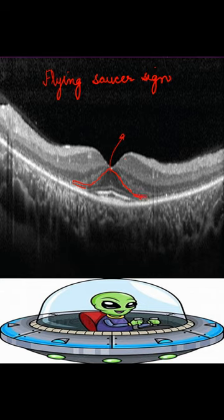Similarly, the external limiting membrane is present just in the center, and in the parafoveal region it is absent. Similarly, your ellipsoid zone is present in the center but absent in the periphery.